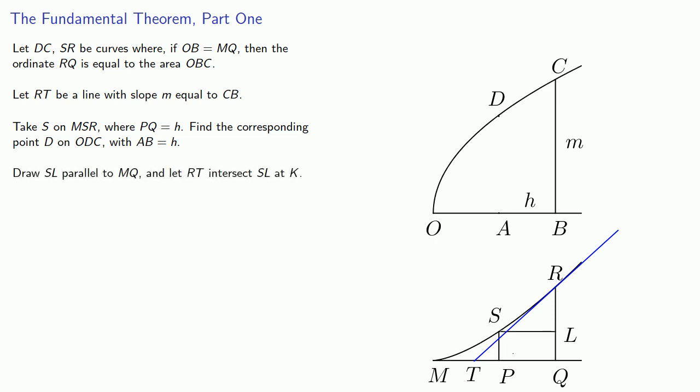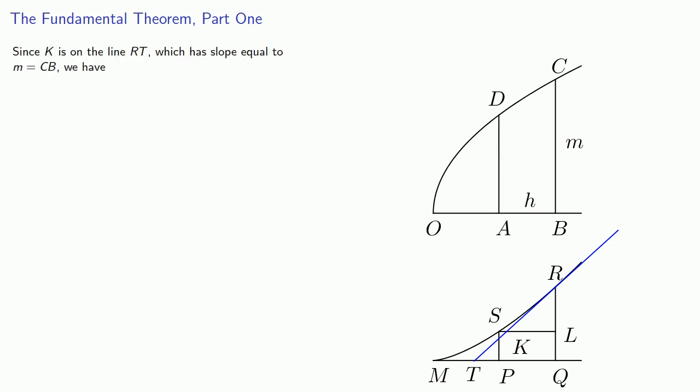We'll draw SL parallel to the axis MT and let RT intersect SL at some point K. We'll also draw AD perpendicular to our axis. Since K is on the line RT which has slope equal to M which is equal to CB, we have RL to KL as M and so RL is M times KL.